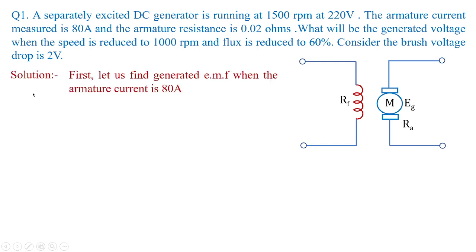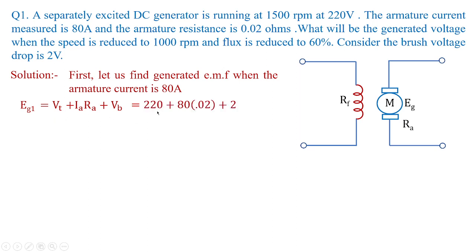First, collect the data and calculate the EMF when the machine is running with armature current of 80 amperes. For a separately excited machine, the generated voltage equals terminal voltage plus Ia·Ra plus the drop across the brush contacts. Substituting the given data: terminal voltage is 220 volts, Ia is 80 amperes, Ra is 0.02 ohms, and Vb is 2 volts. The Eg1 value is obtained as 223.6 volts.